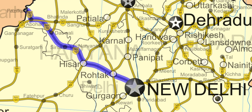As of June 2016, a special purpose vehicle, Roadtik Hissar Tollway Private Limited, completed the widening of the stretch from Hissar to Roadtik to four lanes — two lanes in each direction — with wide paved shoulders and a tree-lined median in the middle.